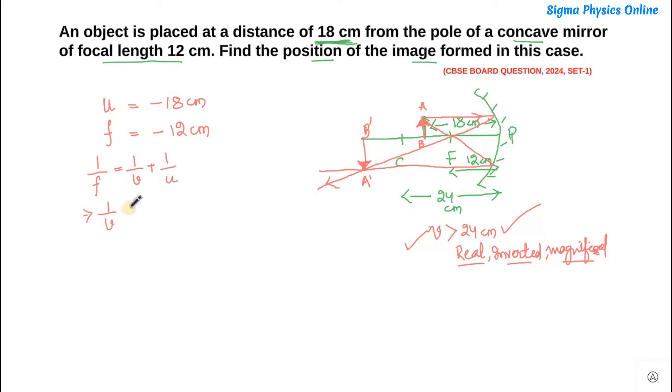So our 1 by v will be 1 by f minus 1 by u. Now let's substitute these values: f is minus 12 and u is minus 18 cm, which is minus 1 by 12 plus 1 by 18. So the LCM, let's write down as 12 into 18, it will be easier while solving it.